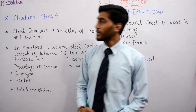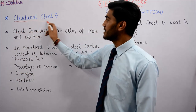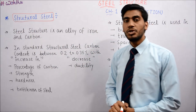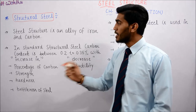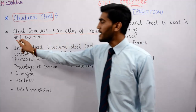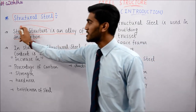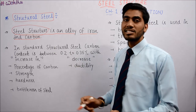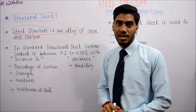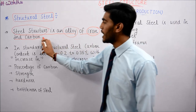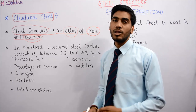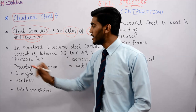Now let us talk about the next topic - Structural Steel. Structural steel is the steel that is used inside structures. The first point is: steel is an alloy of iron and carbon. So structural steel is a mixed metal - an alloy made of iron and carbon.